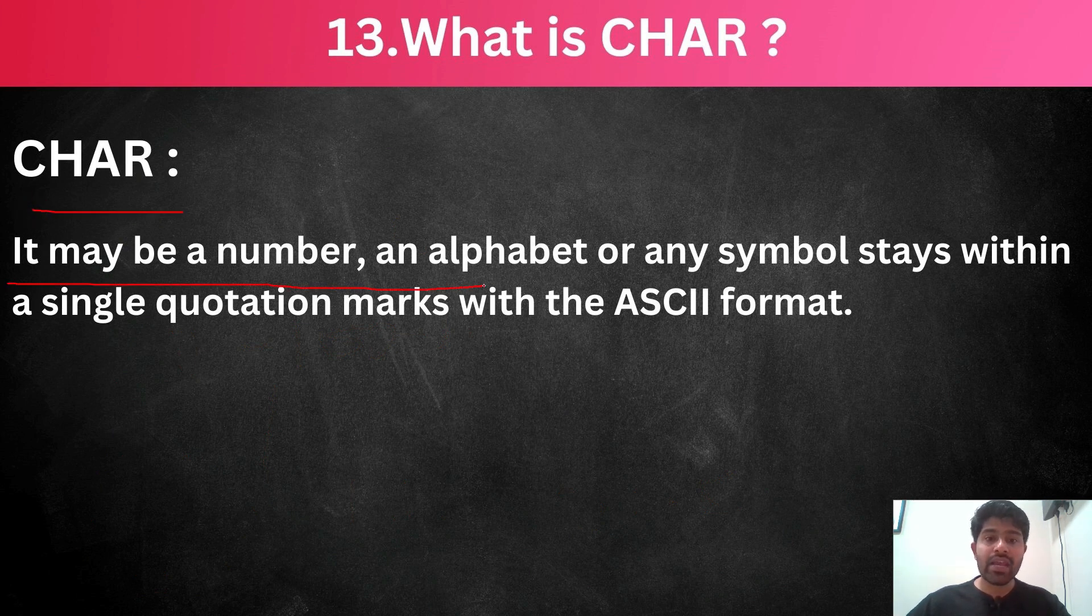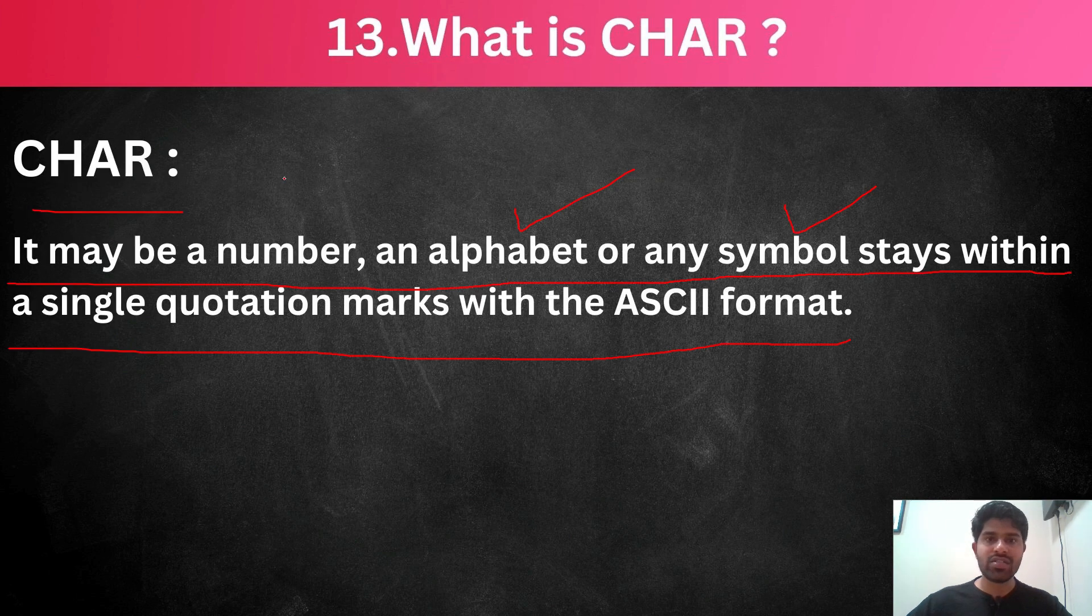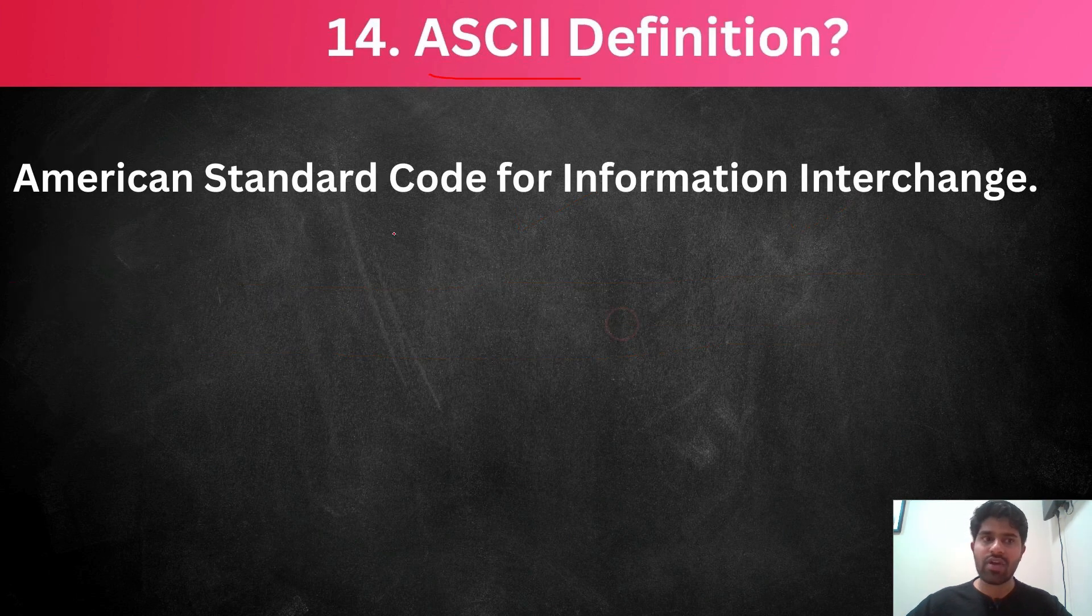Character. It may be a number or an alphabet or any symbol that states within the single quotation marks with the ASCII format. So, still now we are reading only numbers. But if I want to read also alphabets and symbols, then I will use the character. So, what is mean by ASCII? Because this character following the ASCII format. American standard code for information interchange.